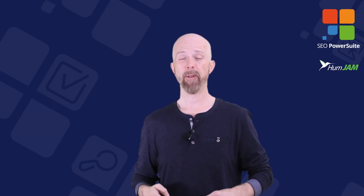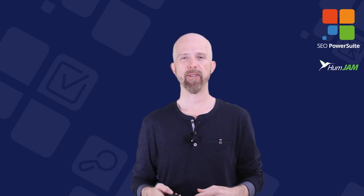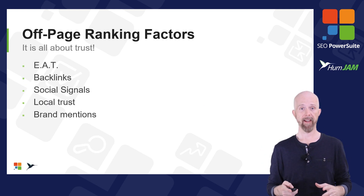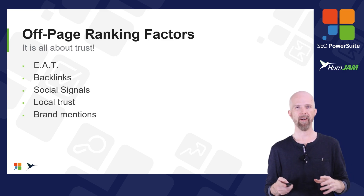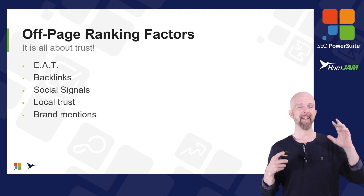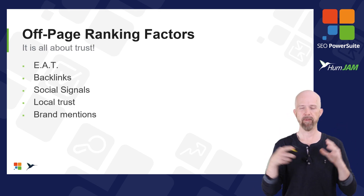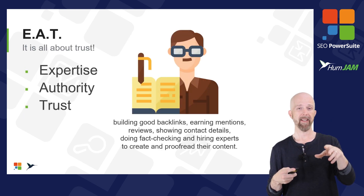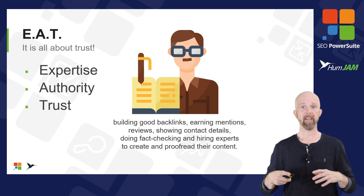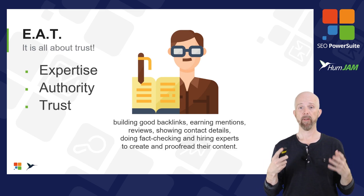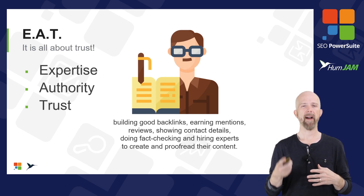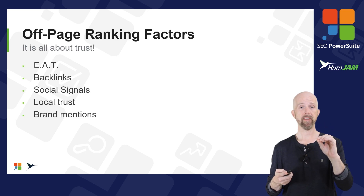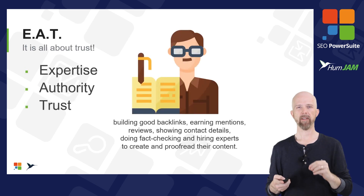Welcome back to SEO Core Fundamentals, where you're learning how to master search engine optimization. In this video we're going to cover the off-page ranking factors. It's all about trust — that's what Google wants to know. Back in the day, black-hatting was to just send tons of links to game this, but not anymore. EAT stands for Expertise, Authority, and Trust, and that's about building good backlinks, earning mentions, doing fact-checking, hiring experts, etc. EAT is based on trust factors, and then we have backlinks, social signals, local trust, and brand mentions.